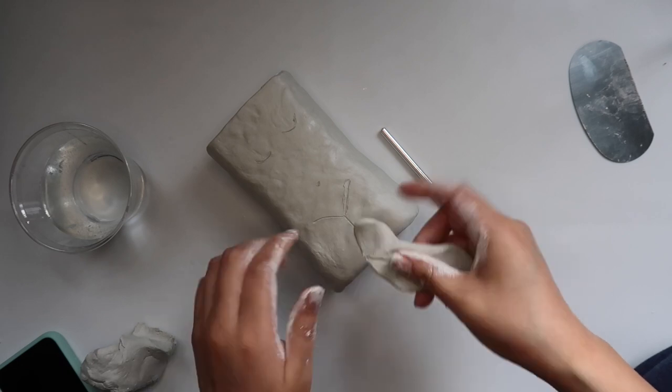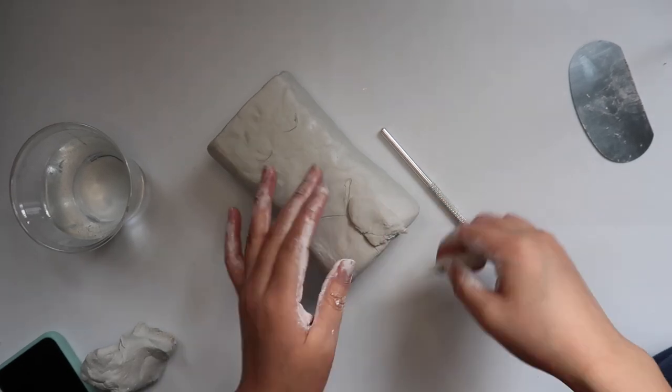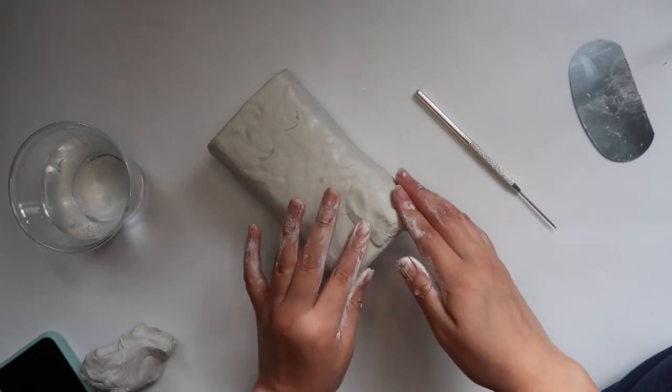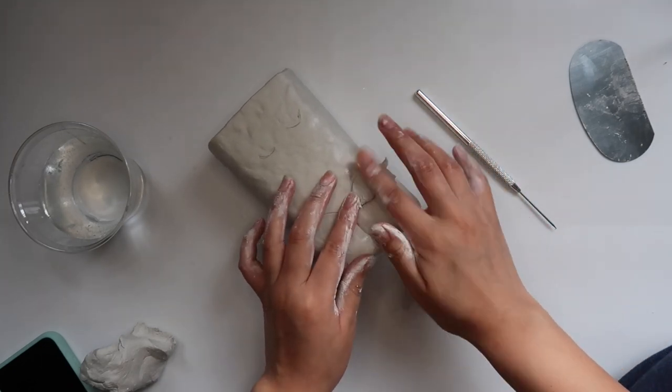So this is my first attempt ever at making a body base, so I'm just gonna let you guys know that I winged it. I started adding clay to where I wanted her legs to be more defined, you know, to give her some thickness.